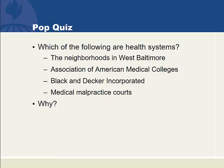The correct answers are that the Association of American Medical Colleges and medical malpractice courts are health systems. One would say that when the colleges have grouped together, they are hopefully trying to participate in producing a supply of doctors. And the medical malpractice courts are used to help produce the quality of medical care.